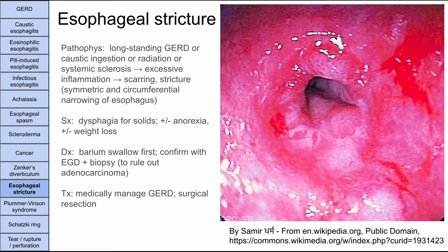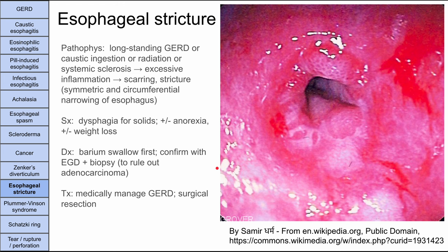Next is esophageal stricture. This can occur in scleroderma, long-standing GERD, caustic ingestion, or radiation. Inflammation leads to scarring and circumferential narrowing of the esophagus. Symptoms are dysphagia and difficulty swallowing solids, which can lead to anorexia and weight loss. Diagnosis is made with a barium swallow showing a small tightening area, confirmed by EGD and biopsy to rule out cancer. These can often be managed medically; if severe, surgical resection is an option.